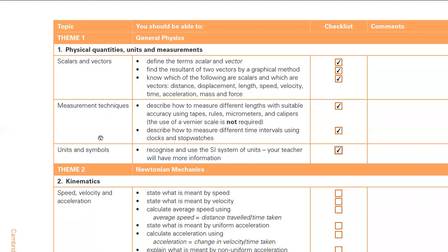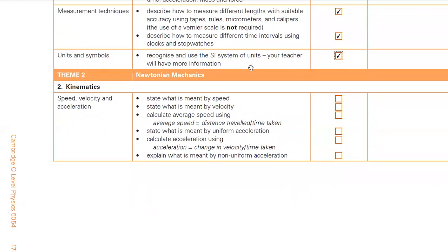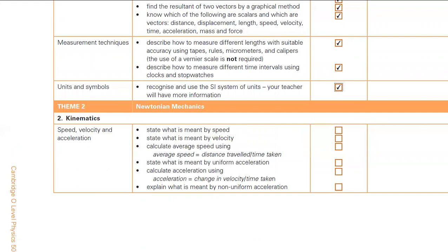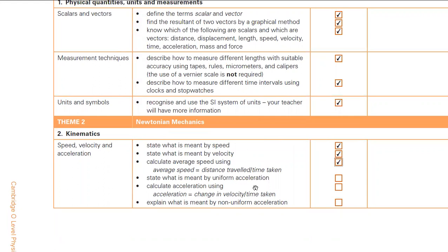The second topic is kinematics: speed, velocity, and acceleration. Speed is distance divided by time — the rate of change of distance. Velocity is displacement divided by time — the rate of change of displacement. Average speed is total distance traveled divided by total time taken. Uniform acceleration means equal change in velocity in equal intervals of time. On a speed-time graph, uniform acceleration appears as a line with constant gradient.